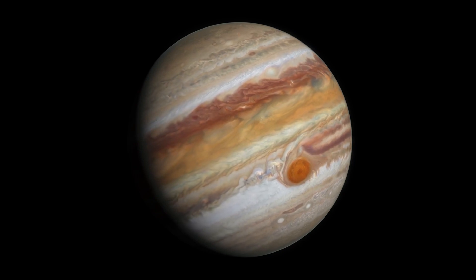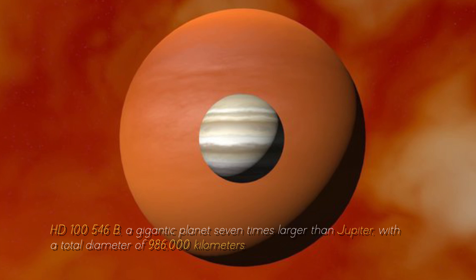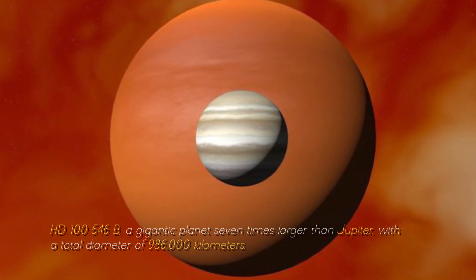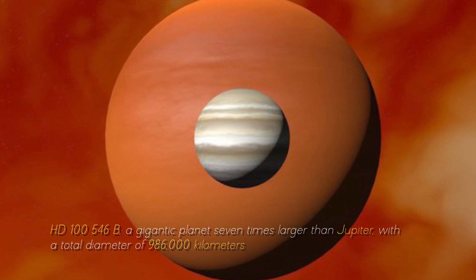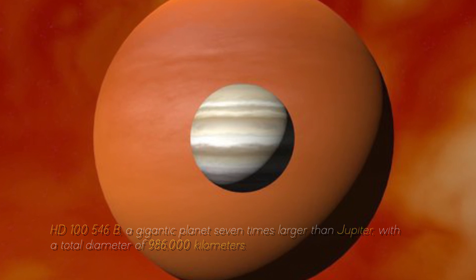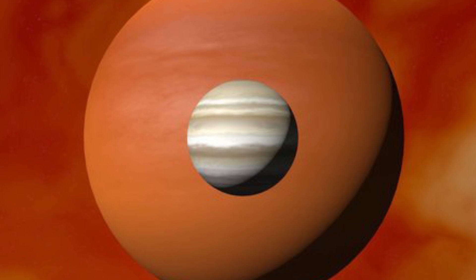Now, let's compare Jupiter with the largest planet in the known universe, HD-10546 b, a gigantic planet seven times larger than Jupiter, with a total diameter of 986,000 kilometers. You can imagine what Earth would look like near this cosmic monster, can't you?